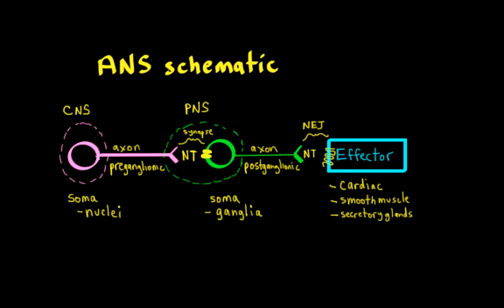So this first neuron, since it's before the ganglia, it's considered a preganglionic neuron. The second neuron, its cell bodies in the ganglia, but then it comes out of the ganglia and goes to an effector organ, those neurons are called postganglionic neurons.